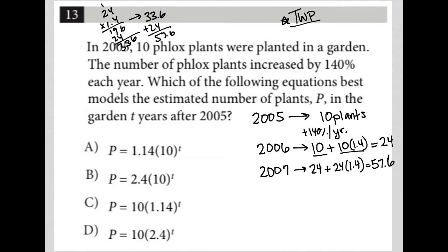Let's keep reading. Which of the following equations best models the estimated number of plants P in the garden, T years after 2005? Here's why going a couple of years beyond 2005 helped: I can take this information and say for 2006, when T equals 1, P equals 24.